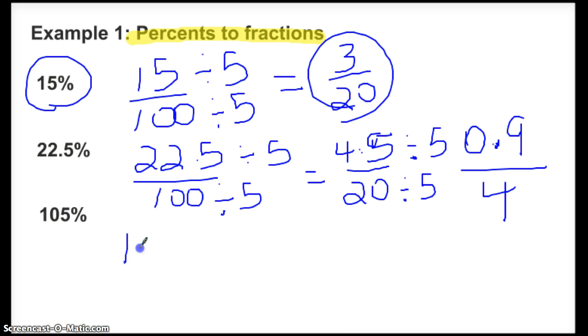And the last one, I have 105 over 100, because once again, percents are all out of 100. So here I can divide by 5. Divide both of those by 5, and 105 divided by 5 is 21. 100 divided by 5 is 20.